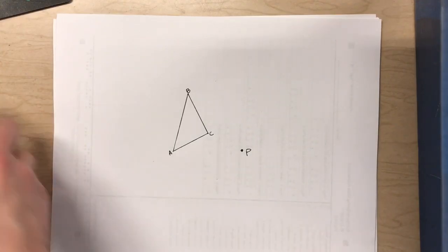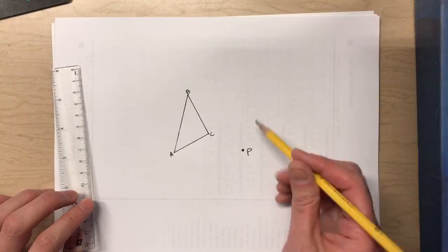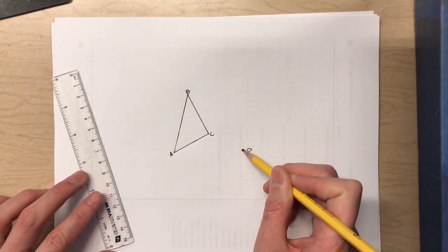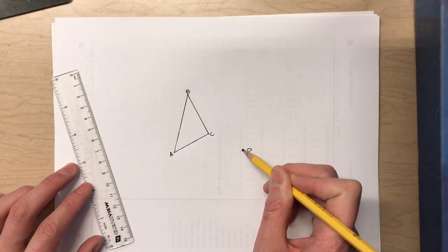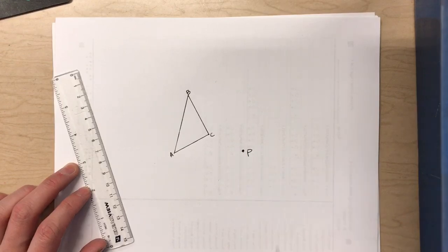So for example, let's say we're given this triangle ABC and we want to construct a dilation of it with a scale factor of 2 based on this point.